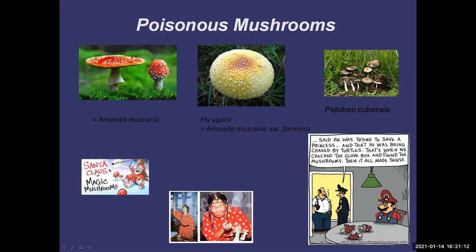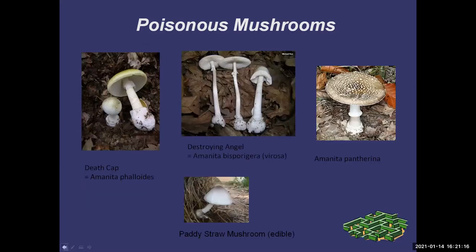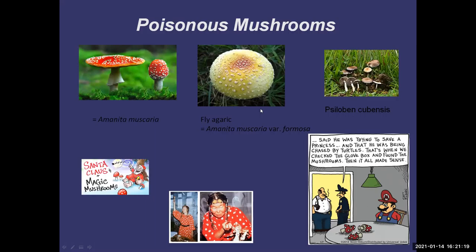Some people will eat these — what they do is parboil them and discard the water several times, which eliminates the water-soluble toxin, and then you can fry them up and eat them. They're no longer hallucinogenic or sickening. But I'm not that brave — I think there are too many other edible mushrooms. Why bother?